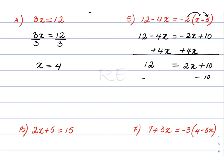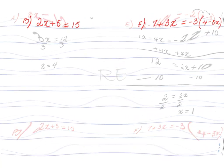We transpose 10 to the other side by subtracting 10 from both sides. That gives 2 is equal to 2x. We divide by 2 to isolate x. Finally, x is equal to 1.